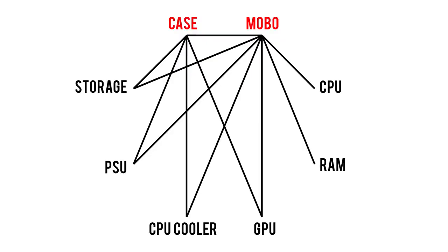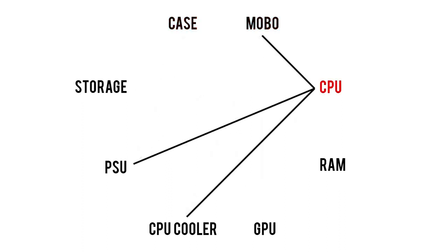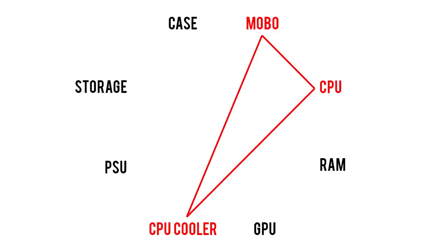Now believe it or not, with the case and motherboard behind us, we've already churned through the majority of compatibility lines. That brings us to the CPU, which really only needs to play nicely with three other components. If you remember how to pair a motherboard with the CPU and you found a CPU cooler that supports your motherboard, by the transitive property, your CPU and CPU cooler should also see no physical incompatibilities, since all three components support the same socket type.